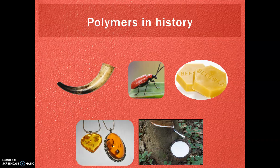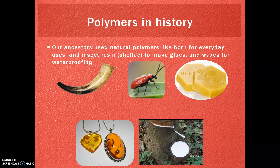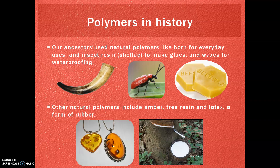We're going to talk about polymers before we talk about plastics, because all plastics are polymers. Polymers used to mean natural polymers — things like horn, insect resin also known as shellac, natural glues, waxes like beeswax for waterproofing. Others included amber, tree resin, and latex, which is a form of rubber. These are all natural polymers.